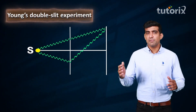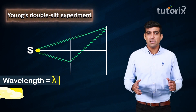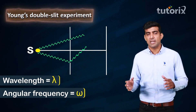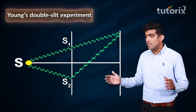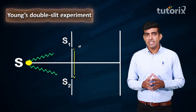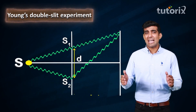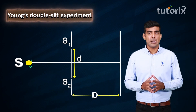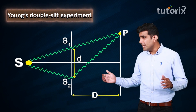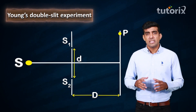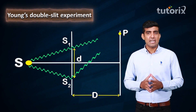Let us say that the wavelength of the source of light is given by lambda, and its angular frequency is given by omega. The two slits are called S1 and S2, and the distance between these two slits is given by small d. The distance between the two slits and the screen is given by capital D. Consider a point P on the screen, where the waves from S1 and S2 interfere.